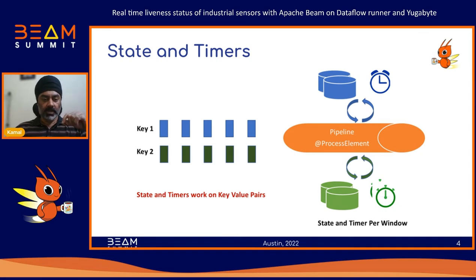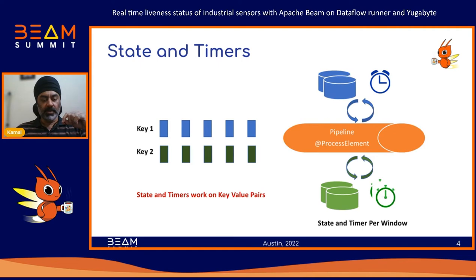Before we look at that, there is a State and Timer feature in Apache Beam which helps us build stateful processing. Before using these two features, you have to make sure your data stream is a key-value pair — it cannot be without a key. This is good for us because the sensor ID becomes our key, and each data point coming from that sensor is the value.